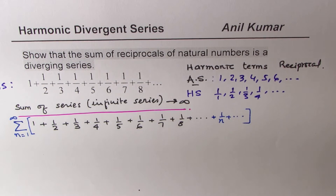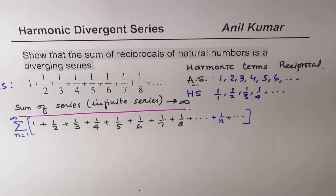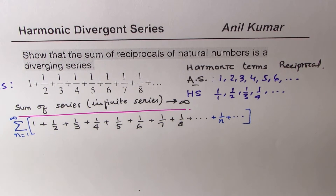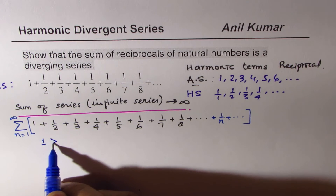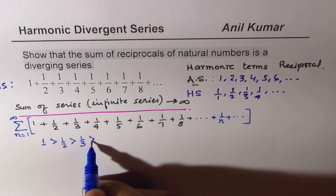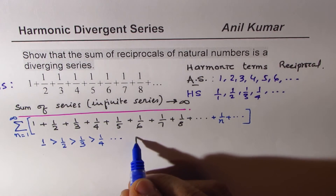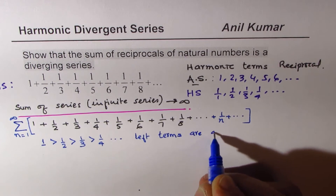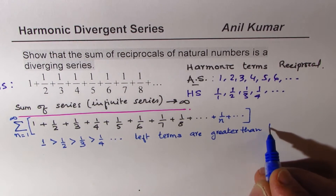When you look at these terms you notice that there is one and a half, and every term on the left is greater than the term on the right. We know one is greater than half, and half is greater than one over three, which is also greater than one over four. So the left terms are greater than the right terms.